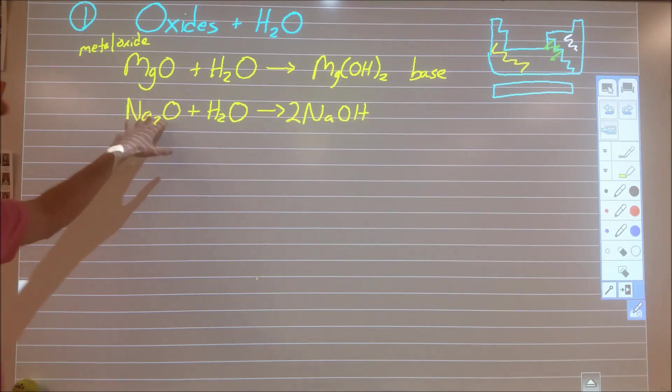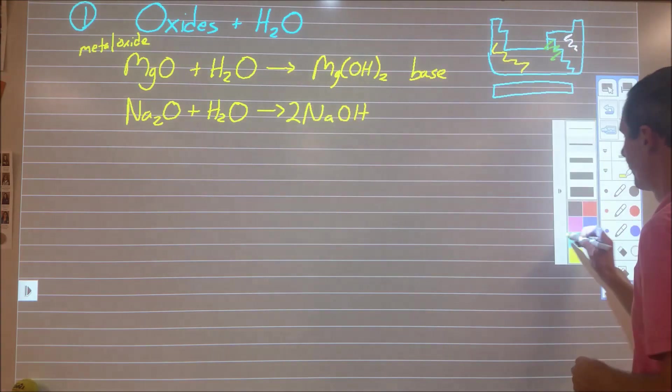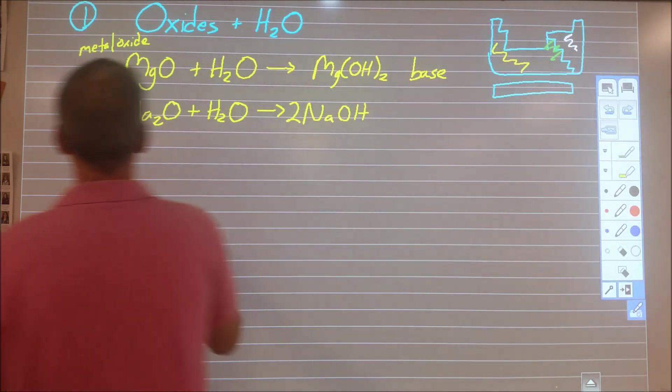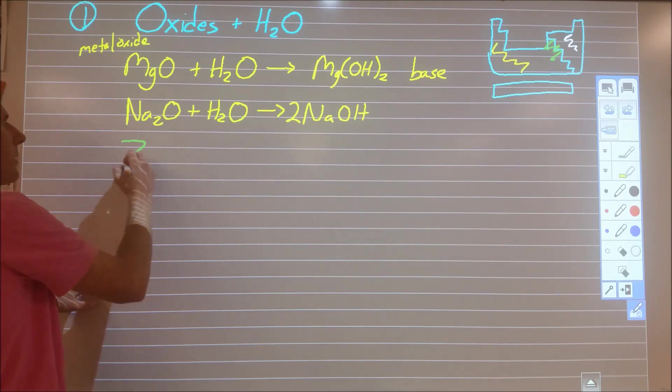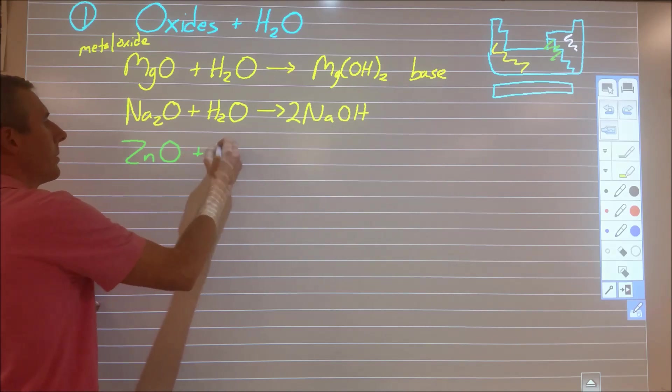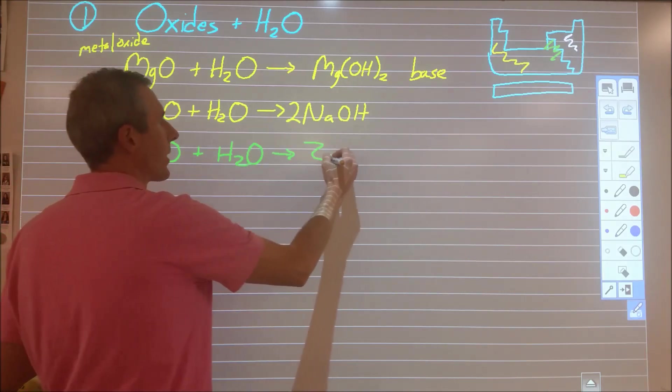Now the tricky part is, when you start to get close to the staircase, that starts to shift a little bit. So in the second one, we did kind of a metal towards the middle of the periodic table, so let's do zinc. That's an example there. And when we add zinc oxide to water, we end up making zinc hydroxide.